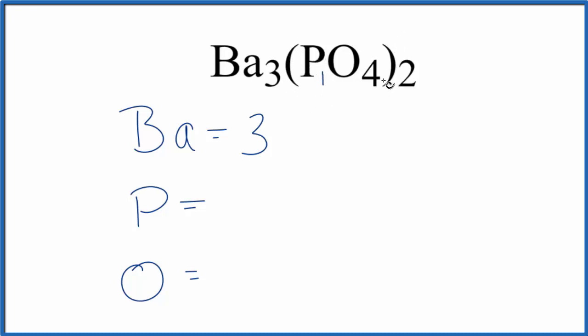but it's in these parentheses. So everything in the parentheses here gets multiplied by the subscript of 2. 2 times 1, 2 phosphorus atoms. 2 times 4, that's 8. 8 oxygen atoms.